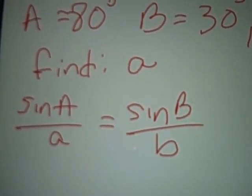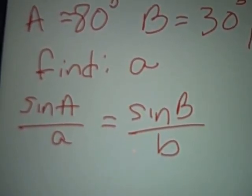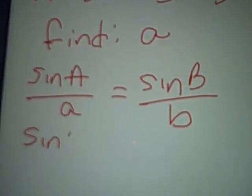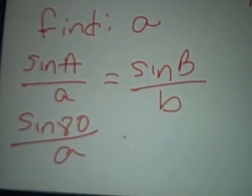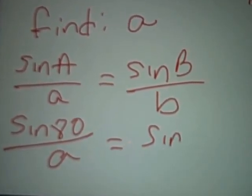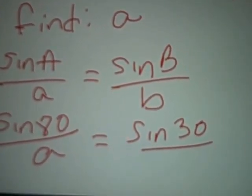To solve a proportion, you know we're going to cross multiply. So we're plugging in: sine of 80 degrees over little a equals sine of 30 degrees over little b.